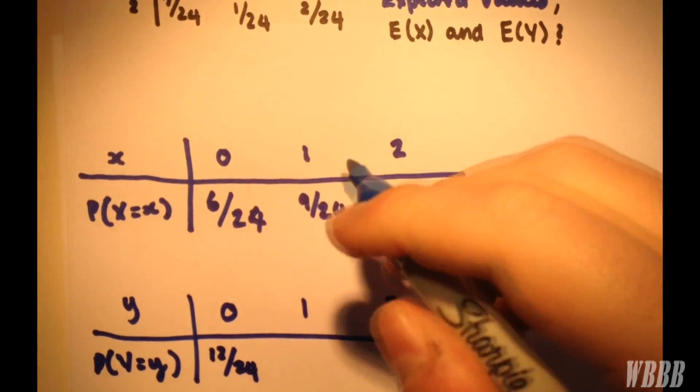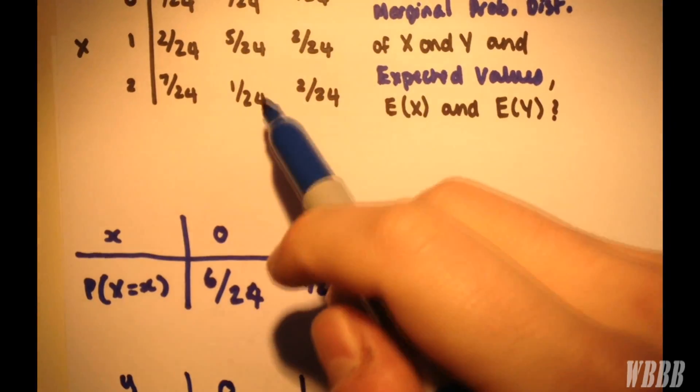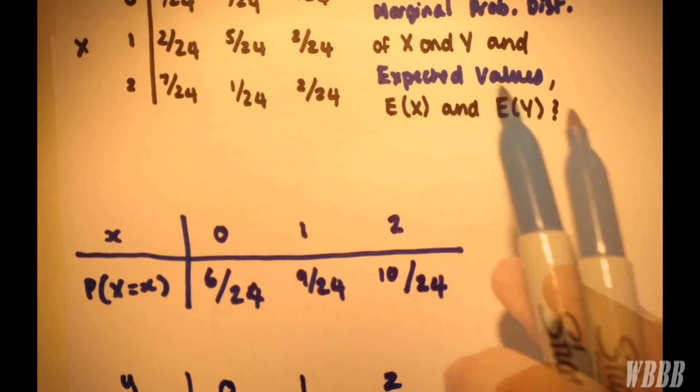Which is, of course, a half. And for 1, we have 1, 5, and 2.